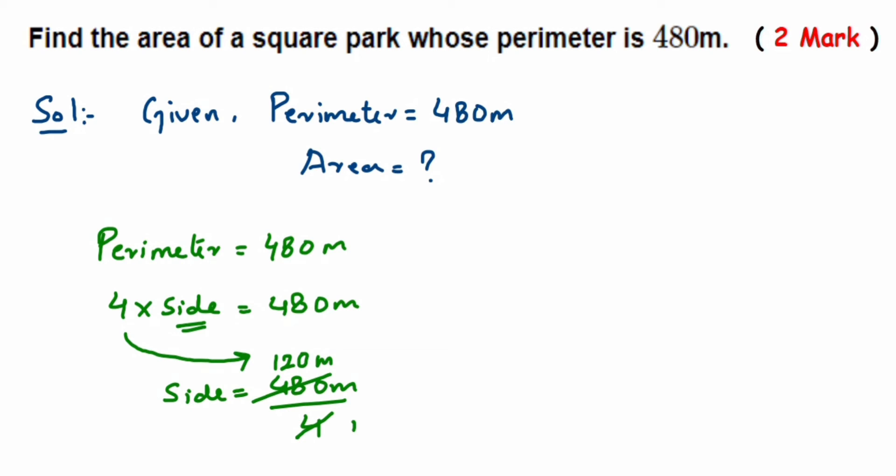So 120 meters we'll get. So side is equal to 120 meters. Now using this, we can be able to find out the area. So area formula is side into side.